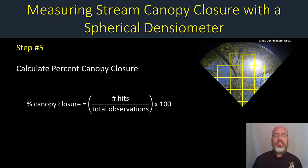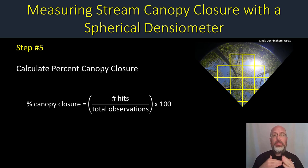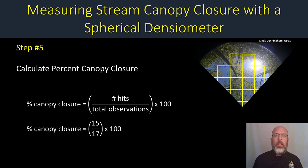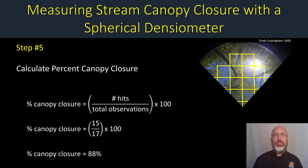The 15 other intersections are all covered by vegetation. The last step is to calculate percent canopy closure. The formula is simply the number of hits divided by the total observations — in our case, 17 intersections — multiplied by 100 to get the percent. In our example we had 15 hits, with only two that were no-hits, so: 15 divided by 17, times 100, gives a percent canopy closure of 88 percent.